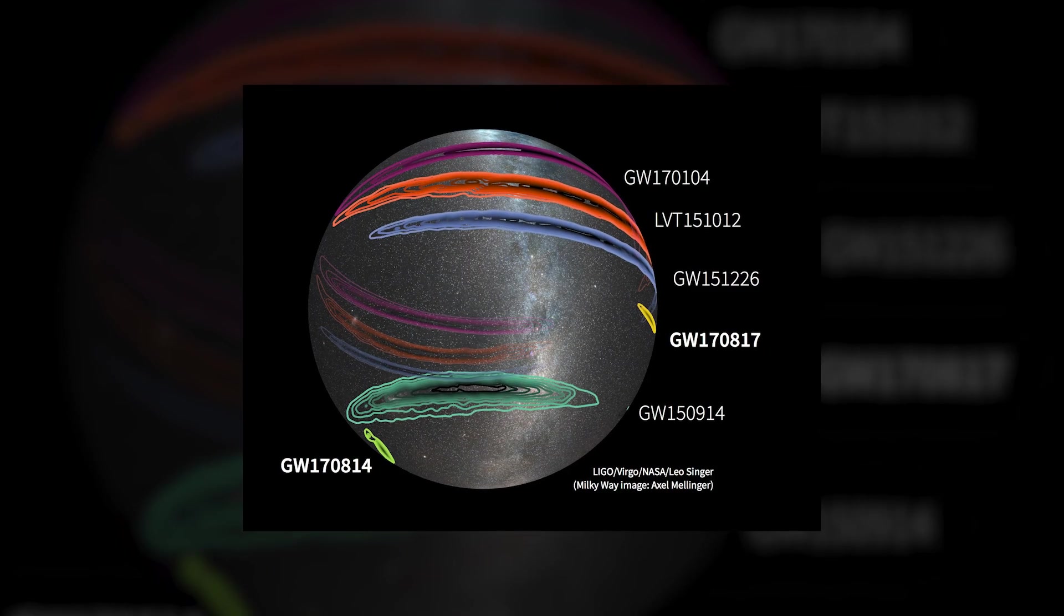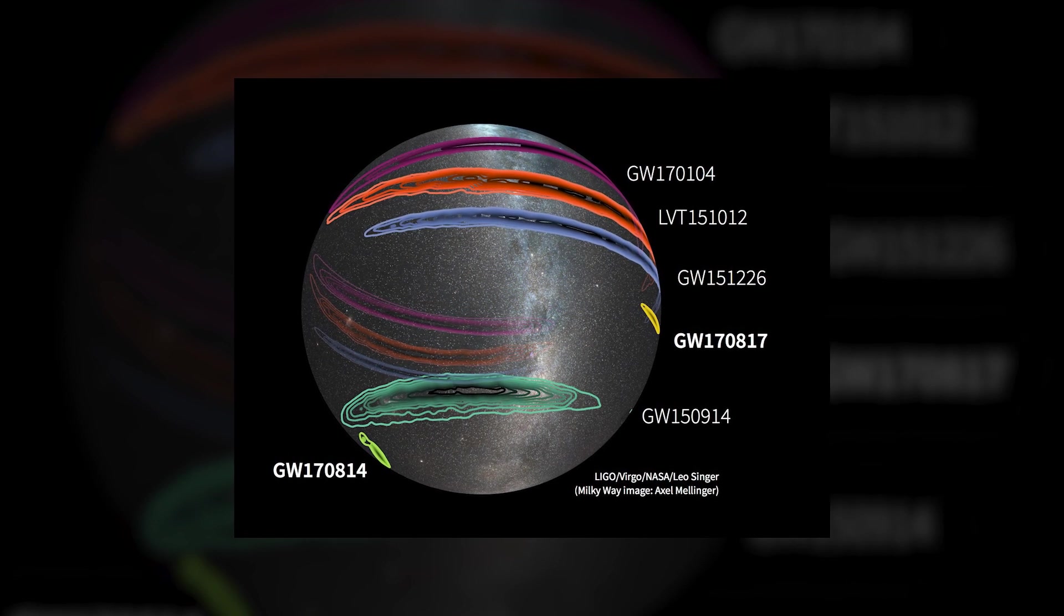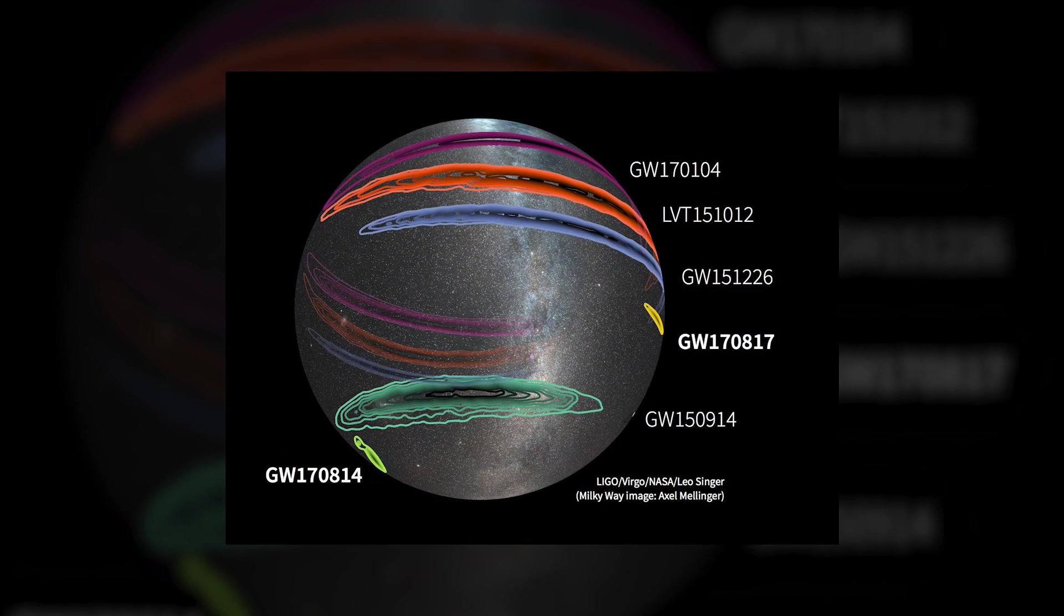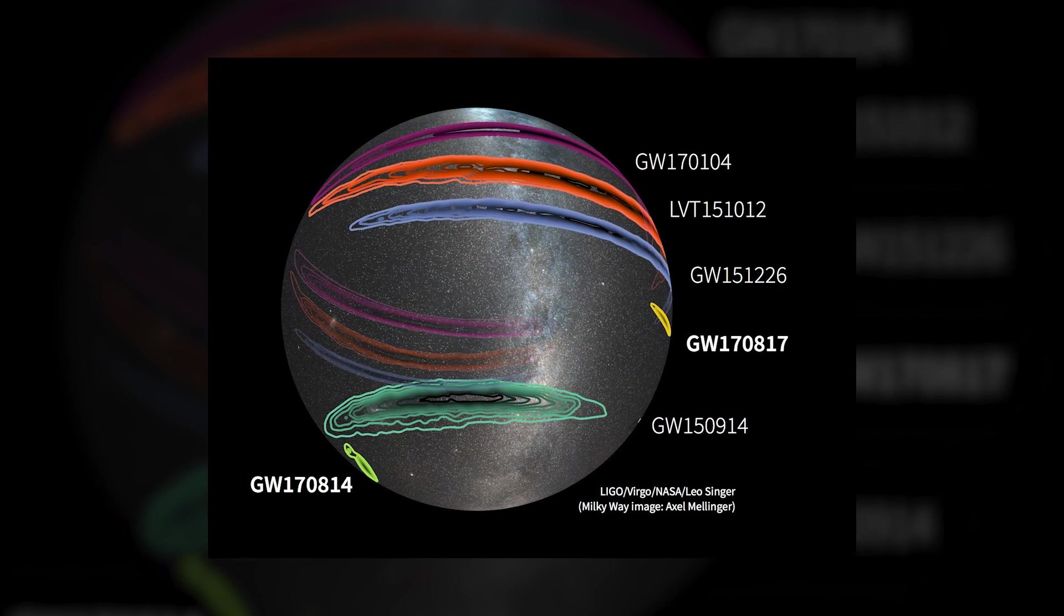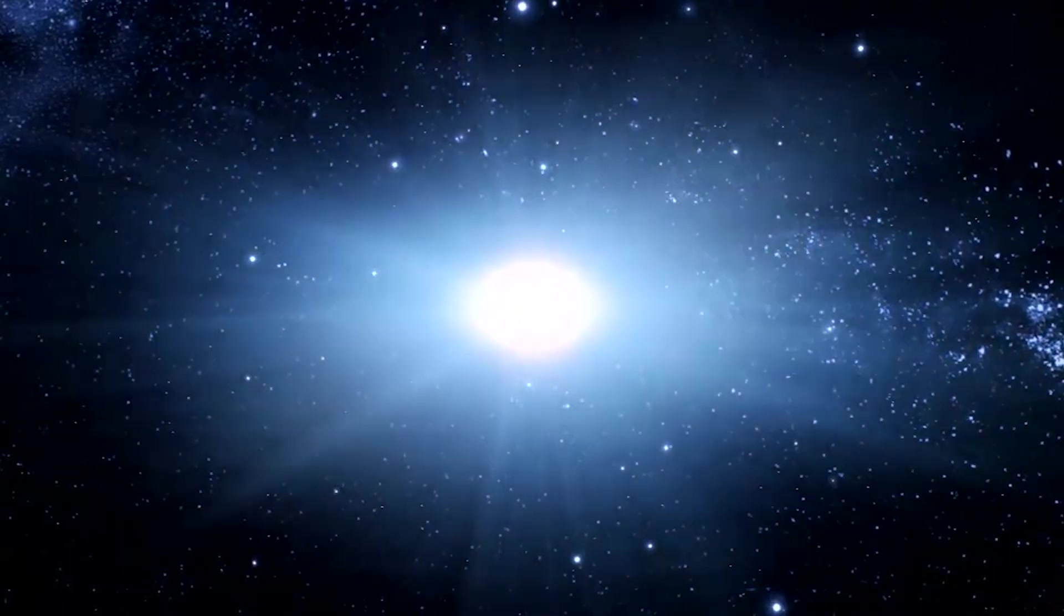The light from GW170817 was detected partly because it was nearby, making it very bright and relatively easy to find. When the neutron stars collided, they emitted a kilonova, light 1,000 times brighter than a classical nova, resulting from the formation of heavy elements after the merger.